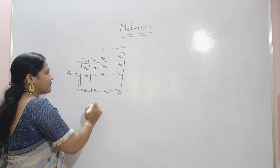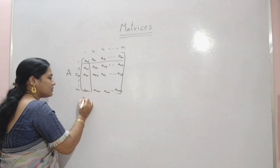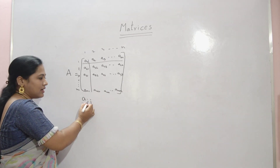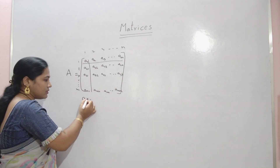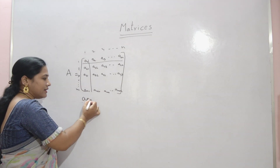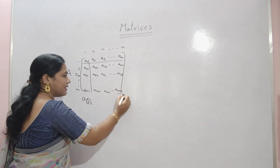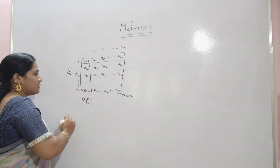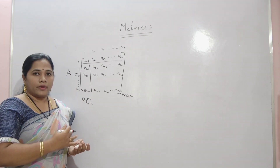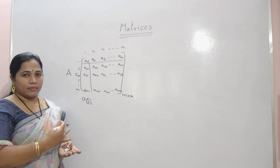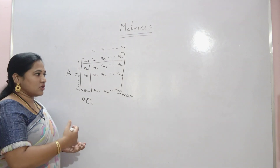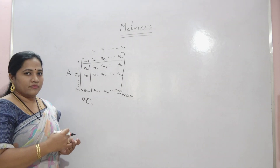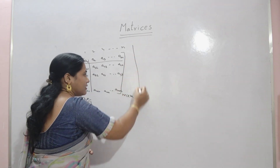In this way we can write the matrix. The matrix may be a 2 by 2 matrix, a 3 by 3 matrix, or a 1 by 2 matrix, a 1 by 3 matrix. Based on that order, we can divide different types of matrices. So first I will tell you the different types of matrices.